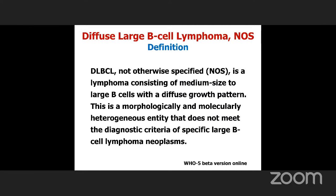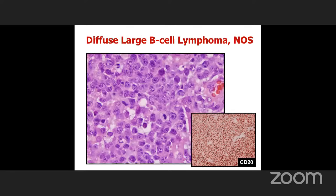Here's the definition in the WHO-5 beta version: a lymphoma of medium-sized to large B-cells with a diffuse growth pattern. This is not a morphologically or molecularly homogeneous entity — it's very heterogeneous. I would suggest that the definition of diffuse large B-cell lymphoma is very old-fashioned: large cells, diffuse pattern, B-cells. With that kind of old-fashioned definition, it's no surprise it's a very heterogeneous entity. The criteria for this diagnosis have not changed very much since about 1981 when CD20 was first reported, initially called B1 when Dr. Lee Nadler first described it.